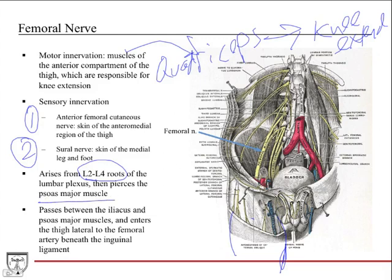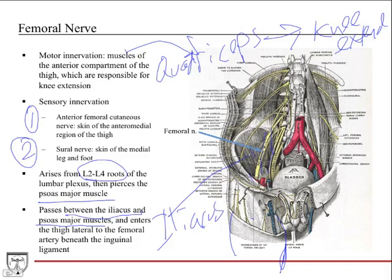Here's the femoral nerve right here — psoas is cut here, so it would pierce through that. The femoral nerve is a nice big nerve traveling in the pelvis. Then it passes between the iliacus and the psoas major muscles. Here's the iliacus — a broad muscle originating from the iliac crest — and here's the psoas, so you can see it traveling just between those two muscles.